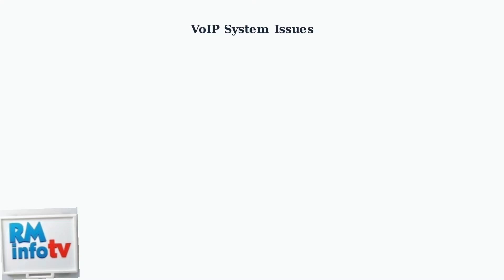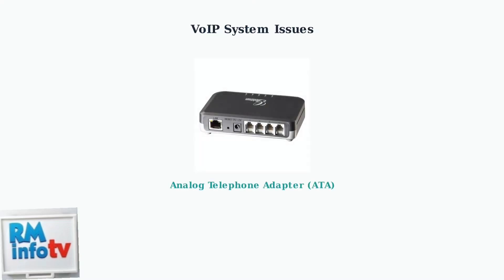VoIP systems have different issues since they depend on your internet connection. Problems often involve the analog telephone adapter, network configuration, or service registration. This is an analog telephone adapter, or ATA. It converts your traditional phone to work with VoIP by connecting to your internet router and phone service provider.